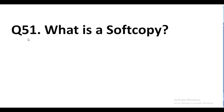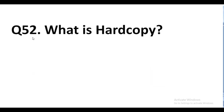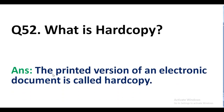Question number 51. What is a soft copy? Answer. An electronic version of a document stored on a storage device is called a soft copy. Question number 52. What is hard copy? Answer. The printed version of an electronic document is called hard copy.